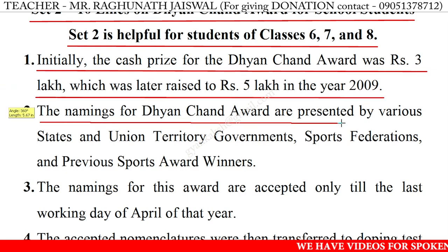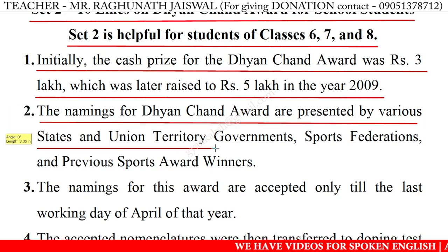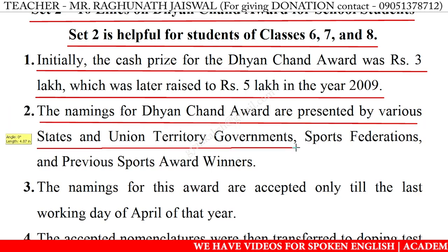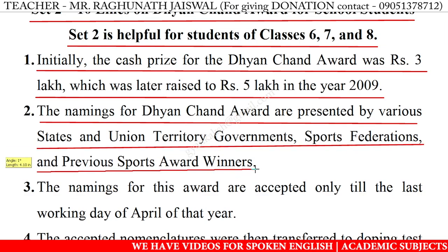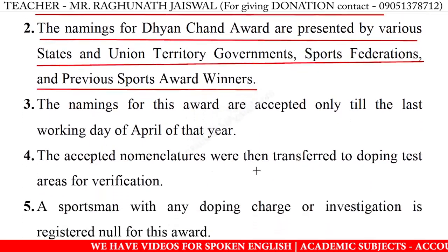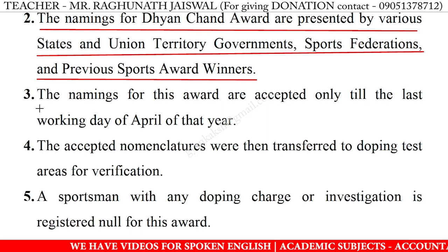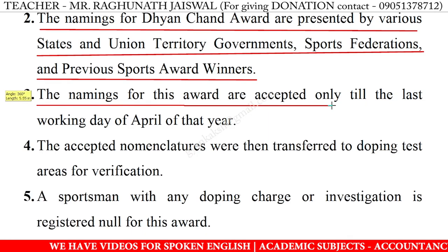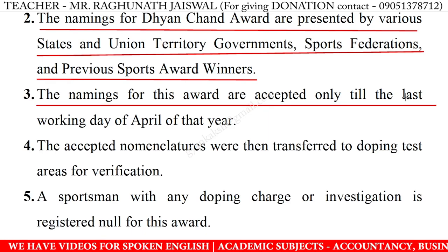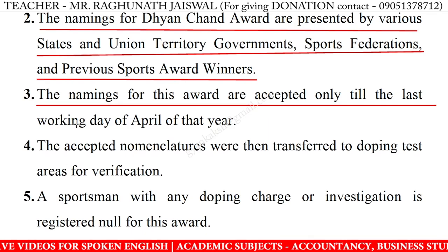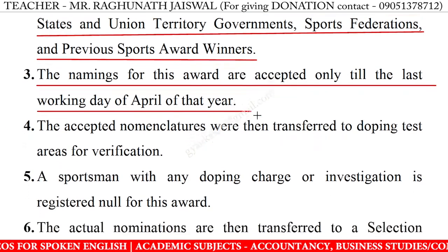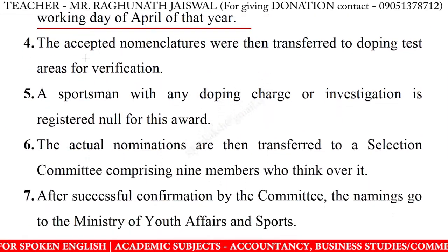The nominations for the Dhyanchand Award were presented by various states and union territory governments, sports federations, and previous sports award winners. The nominations were accepted only till the last working day of April of that year.